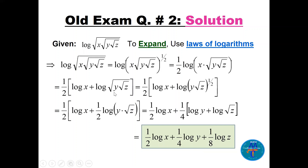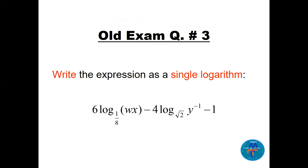Continuing, √y · √z = (y · √z)^(1/2), so we bring another half outside. Multiplying: 1/2 times log x, then 1/2 × 1/2 = 1/4 times (log y + log √z). Finally, log √z = log z^(1/2), and 1/4 × 1/2 = 1/8·log z.